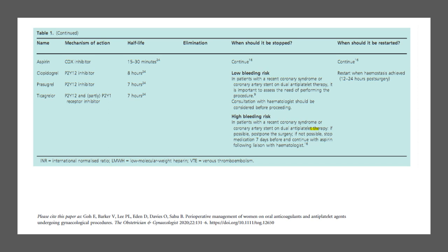So this table talks about the different drugs and basically when should they be stopped and restarted for surgery. So aspirin does not need to be stopped, it can be carried on. Clopidogrel, prasugrel, and ticagrelor needs to be assessed based on the bleeding risk. So if there's a low bleeding risk, in patients with recent coronary syndrome or coronary artery stent on dual antiplatelet therapy, it's important to assess the need of performing the procedure. Consultation with the hematologist should be considered before proceeding. High bleeding risk, and if the surgery cannot be postponed, then stop medication seven days before and continue with aspirin following liaison with hematology. When should it be restarted? Restart when hemostasis is achieved, so usually 12 to 24 hours post-surgery.